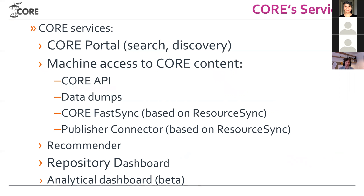The more interesting services are the CORE API and data dumps where people can download large datasets and do something interesting with them. There are two services which make use of ResourceSync: the first is called Core FastSync, and the other is called Publisher Connector, developed in a project called Open-Mined. We also have a recommender, a repository dashboard, and an analytical dashboard.